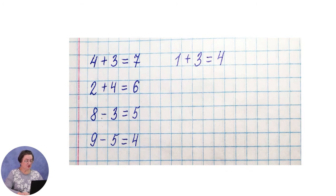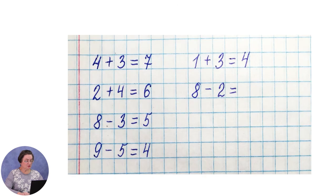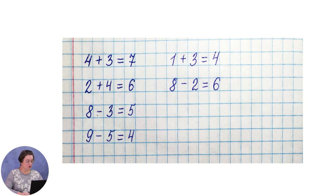Ниже, через одну клетку, пишем следующий пример: 8 минус 2. Смотрим внимательно: какое арифметическое действие? Молодцы — вычитание. Вспоминаем состав числа. 8 — это 2 и сколько? Правильно, 6. Значит, 8 минус 2 равно 6.